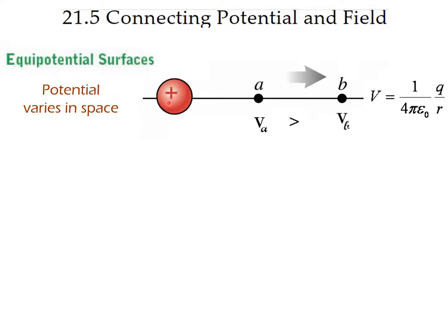Let us look at the case of a point charge and the potential it produces at point A. The potential is given by kQ divided by r, so it will have some value at A and a smaller value farther away where r is larger. If we move to another point at the same distance, the potential is the same as point A — so all points equidistant from the charge are at the same potential.